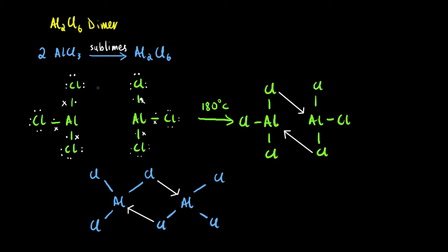We can see that each of the chlorines has a lone pair. What happens is that the chlorine will donate two of its electrons, which is one pair, and give it to the aluminum of the other AlCl3 molecule. Similarly, this chlorine will donate one pair of electrons to the aluminum of the other AlCl3 molecule.